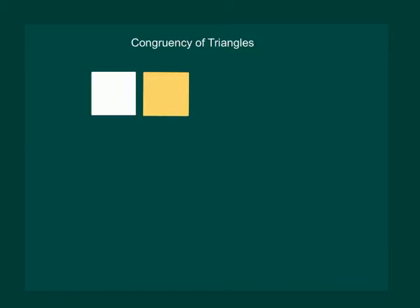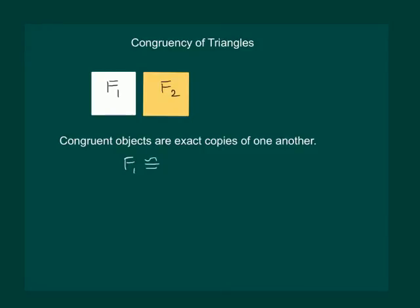We can say that white and yellow stamps are congruent to each other, and congruent objects are exact copies of one another. If we give names to our stamps, say F1 and F2, then symbolically we can write F1 is congruent to F2.